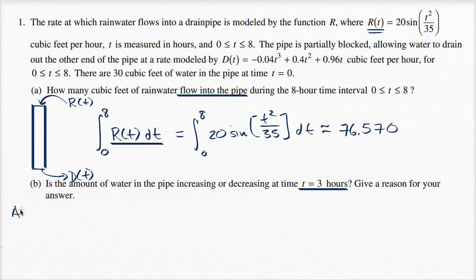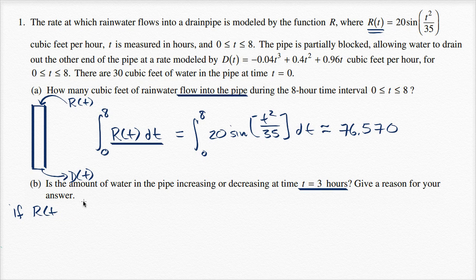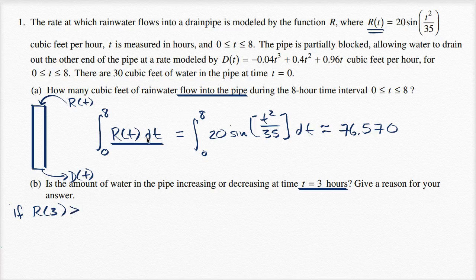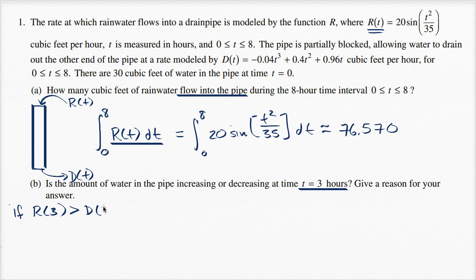Let me be clear. So amount, if R(3), when t equals three, because t is given in hours, t is measured in hours. If R(3) is greater than D(3), if R(3) is greater than D(3), that means water is flowing in at a higher rate than leaving. So that means that water in pipe, then water in pipe increasing.